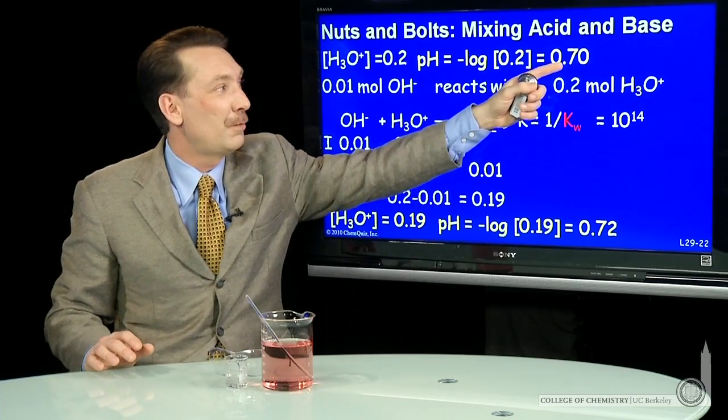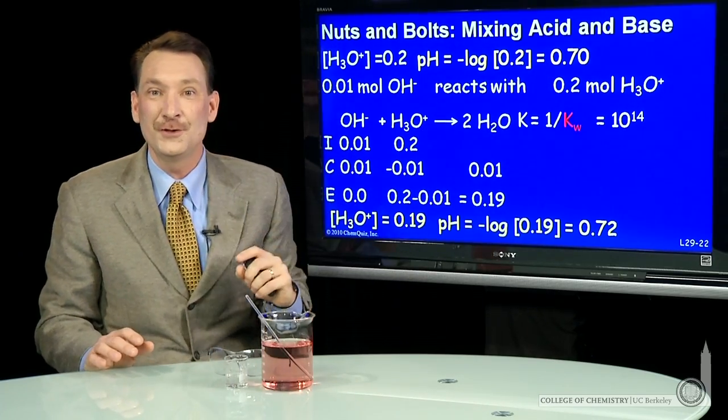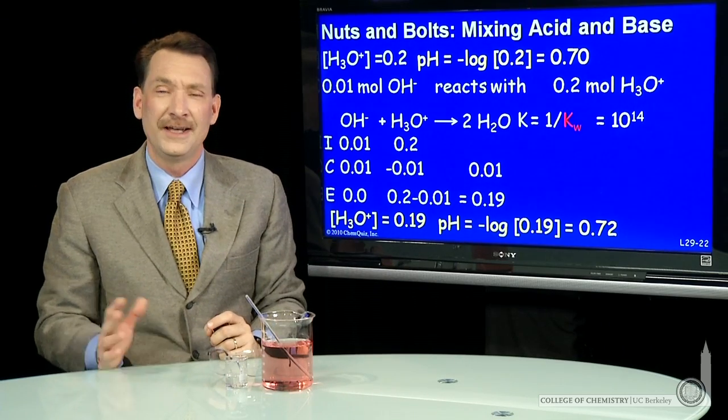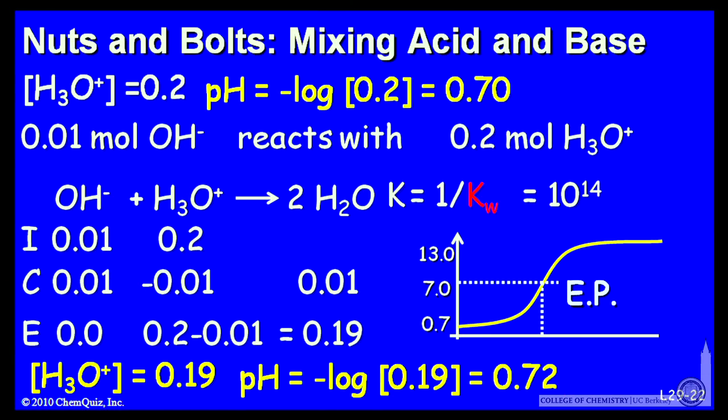So the pH has changed from 0.7 to 0.72. Not very much. In fact, you kind of expect that. Titration curves look like this. As you start adding the base, the titration curve shows you the pH changes only slowly initially. So here we've just added a few hundredths of a mole of base. So we're right in here in the titration curve. The pH hasn't started to change very much.